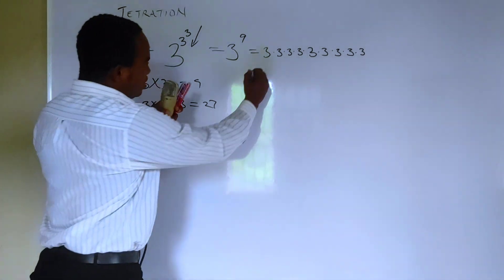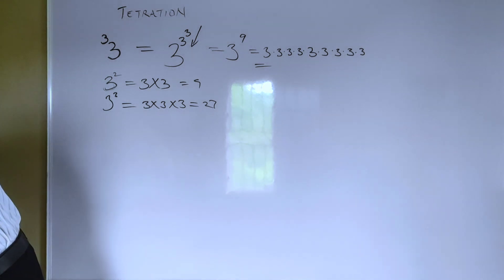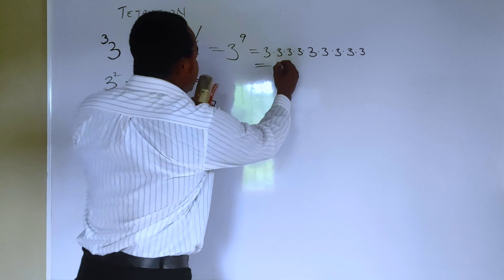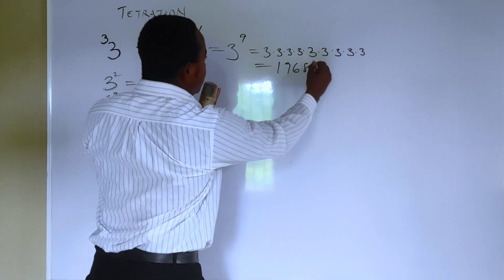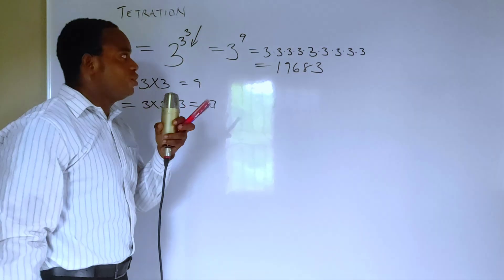And what is this? I'm going to need a calculator for this. Let me get that in a second. So that is 19,683. You can see that's a lot. It gets big pretty quickly.